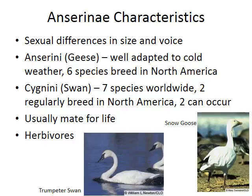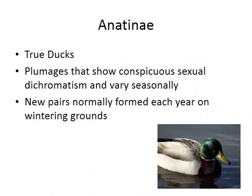For swans — the Cygnini — there are seven species worldwide. Only two regularly breed in North America; others tend to be Asian or European in distribution. Swans have a much longer neck than geese, which is related to how they feed — they feed more from the bottom of the water column. These birds tend to mate for life and are herbivores.